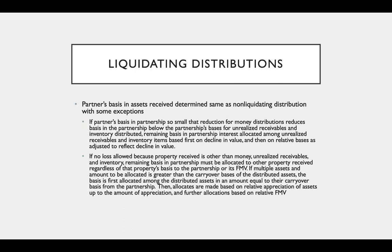If the partner's basis in the partnership is so small that reduction for money distributions reduces that basis below the partnership's basis for unrealized receivables and inventory, that remaining basis in the partnership must be allocated. We allocate among unrealized receivables and inventory items based first on their decline in value and then on the relative basis as adjusted to reflect the decline in value.